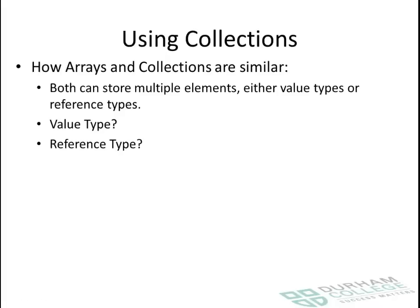Both arrays and collections can hold value types and reference types. Value types might be referring to a boolean, an integer, or a decimal. A reference type could be referring to an object, for example.